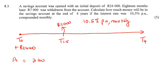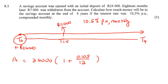So we go 24,000 and use the normal formula: 1 plus the interest rate 10.5%, which is 0.105, divided by 12, compounded monthly. How long is this one going to be in the account? We take it from T0 all the way to T4, so that's 4 years — you can say 48 months, or 4 times 12.